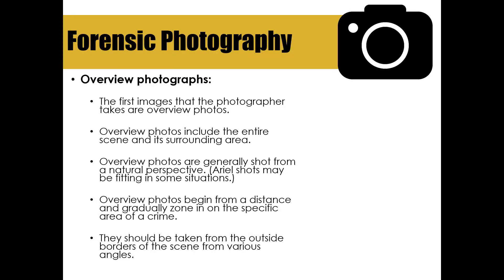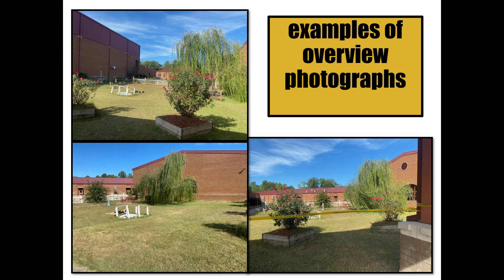The first images that a forensic photographer takes are overview photos. Overview photos include the entire scene and its surrounding areas, and are generally shot from a natural perspective but can include aerial shots — sometimes investigators use drones for this. Overview photos begin from a distance and gradually zone in on the specific area of the crime, and should be taken from the outside borders of the scene and from various angles.